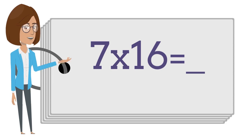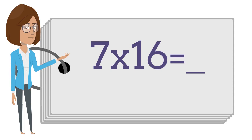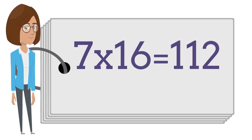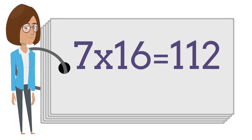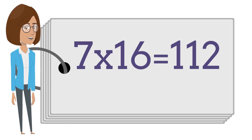7 times 16 is — say the answer out loud. 7 times 16 is 112.